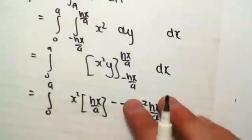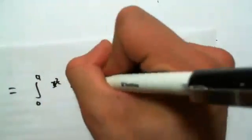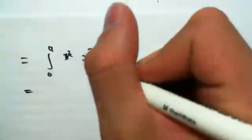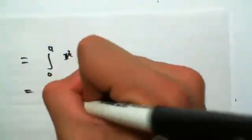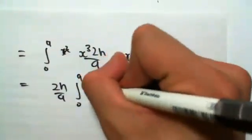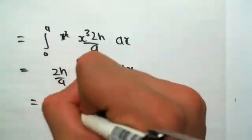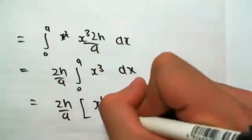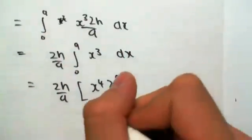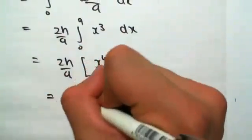So if we were to simplify this, we would just add those two things together, we would have it equal to 0 to a of x cubed 2h on a dx, taking out the constants, which is 2h on a, integral from 0 to a, of x cubed dx. We would get 2h on a. Integrating now for x, we would get x to the power of 4 from 0 to a. Substituting in, we would have, and that's on 4, sorry.